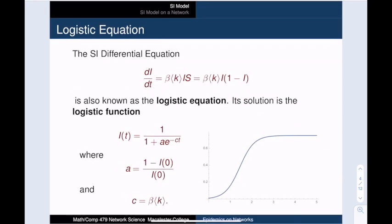This differential equation is known as the logistic equation, and its solution is well known. This solution is called the logistic function. Its formula is 1 over 1 plus some constant times e to the minus ct. The constant A is determined by the initial number of infected people, and the constant C is just our transmission rate, beta times the average degree.